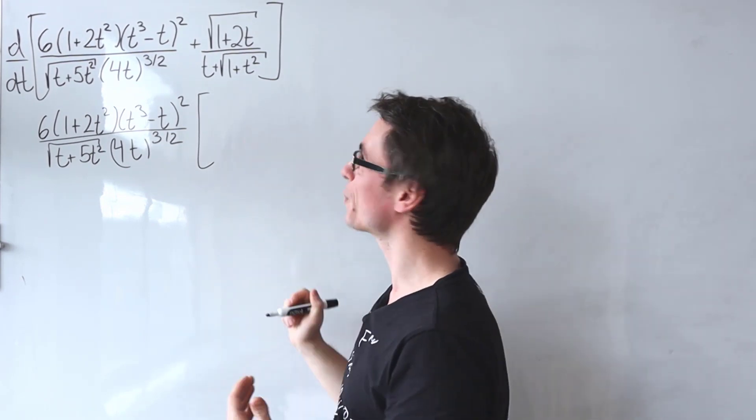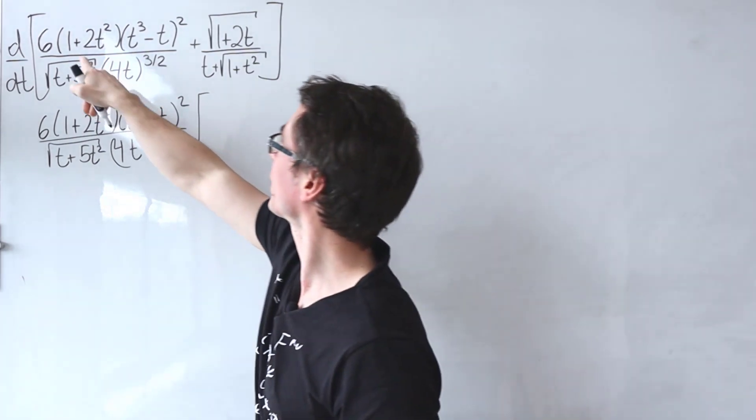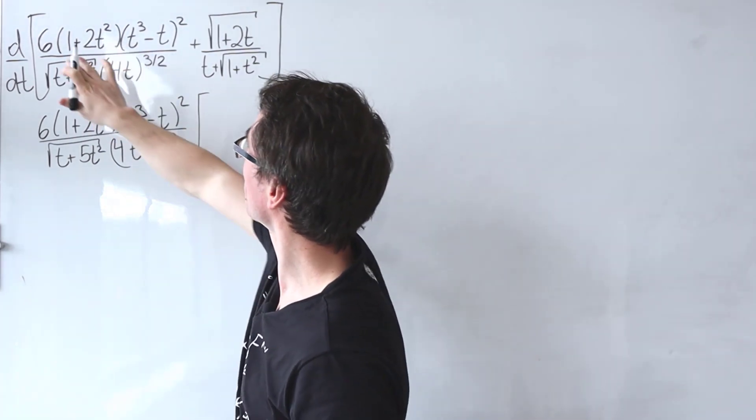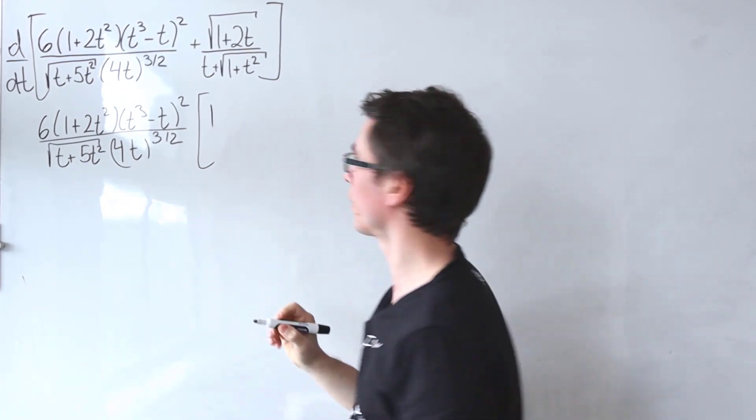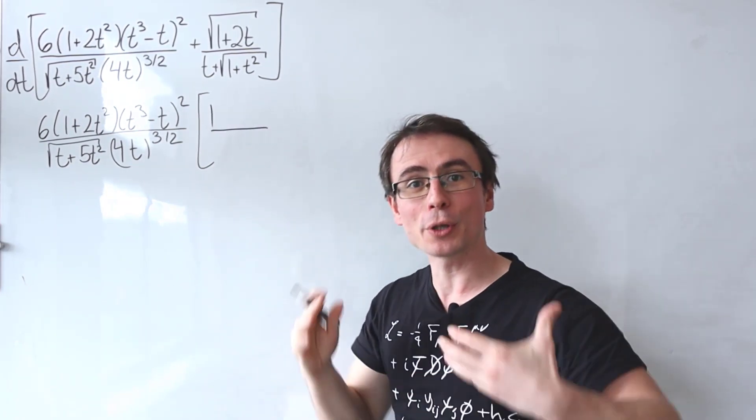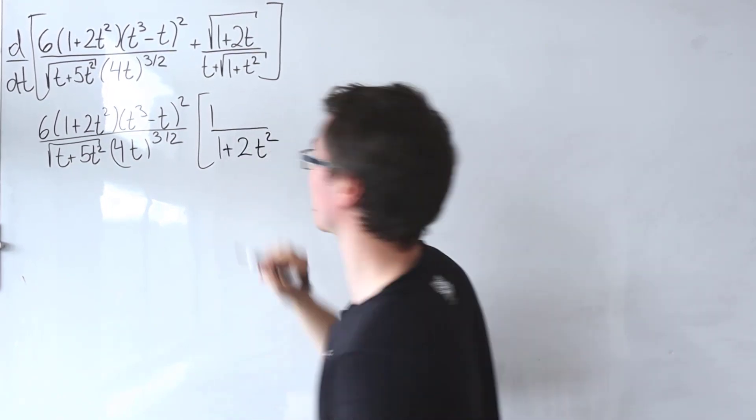First thing that goes into this bracket is the power of our expression. In this case, we'll be looking at 1 plus 2t squared. The power of this is just 1, so I'm going to place a 1. In the denominator, I'm going to place the original expression, which is 1 plus 2t squared.